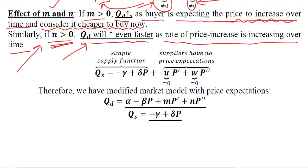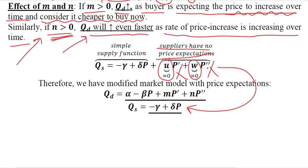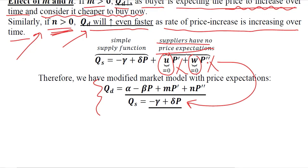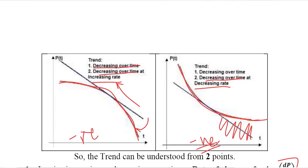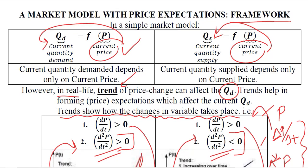For the supply function, we simplify by assuming suppliers do not have price expectations. Setting u and w to zero causes the derivative terms to disappear, returning us to the usual supply function. The framework is now complete — we have built qd and qs with price expectation augmentation. In the next video we will equate them to find a solution, having understood the real-life logic and justification for including price expectations in the usual market model.